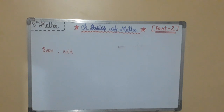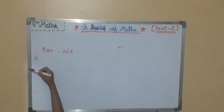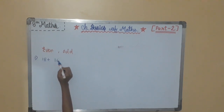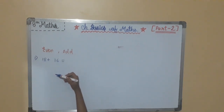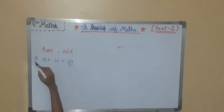There are some properties of even and odd numbers. Property 1: the sum of two even numbers is even. For example, 18 plus 16 — both are even numbers — and their sum is 34, which is also an even number.